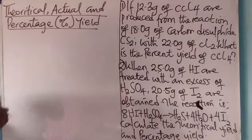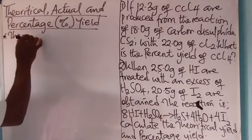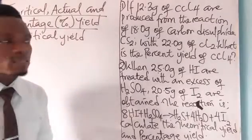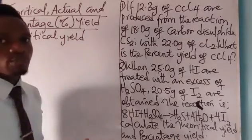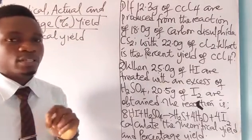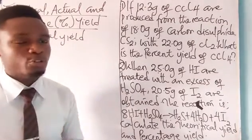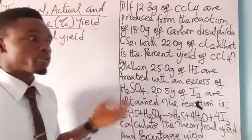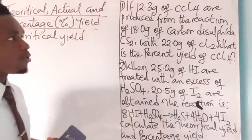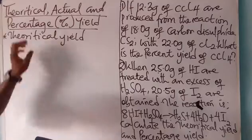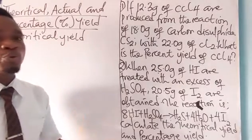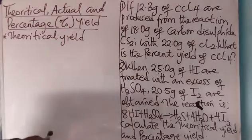Now, what is the meaning of the first term: theoretical yield? It is the amount of limiting reagents or reactants at the beginning of the reaction. Limiting reactants are the first reactants that are used up in a chemical reaction. When reactants are used up, product will no longer be formed. So the amount of limiting reagent present at the start of the reaction is called the theoretical yield. It is also the amount of product formed when the limiting reagents are able to fully react.